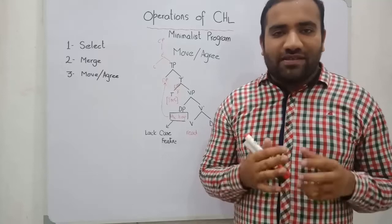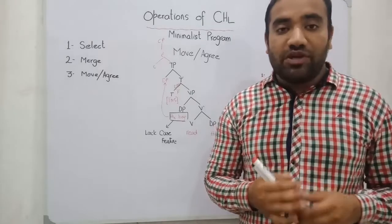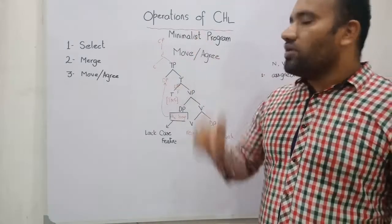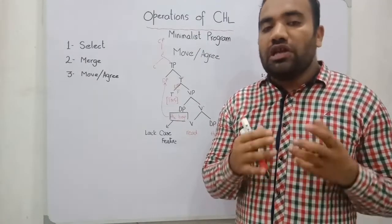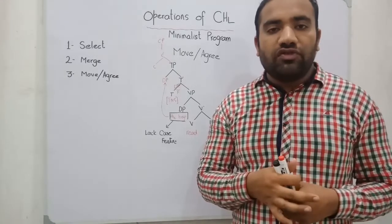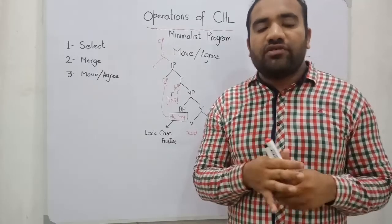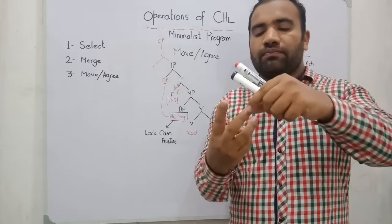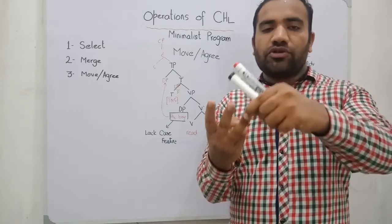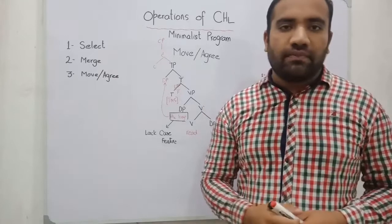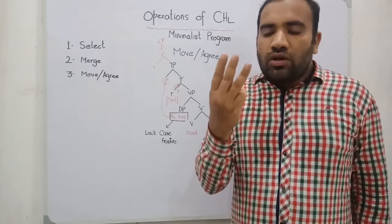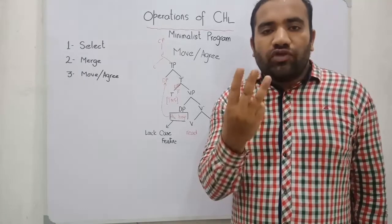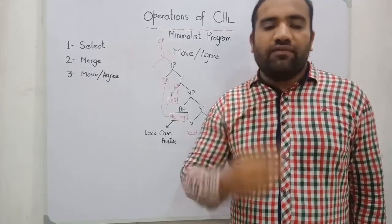In this video series, I am going to discuss the very important deal of linguistics that is the minimalist program. In this video, I am going to deal with the next operation. As you know, in the previous video I told you that CHL works within three operations: one is operation select, second is operation merge, third is operation move or operation agree. When the system fulfills these operations, the derivation will move toward the PF and LF interfaces.